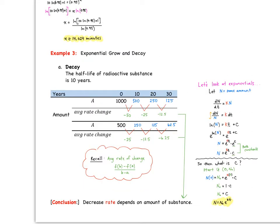These next couple of examples are more just to show you where some of these exponentials come from and to remind us of average rate of change. We're going to look at exponential growth and decay. This first one, we're going to look at decay.